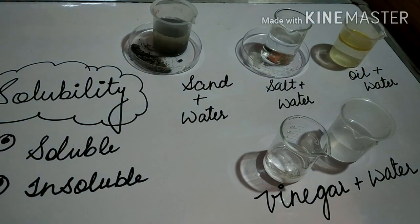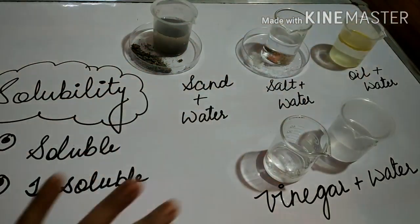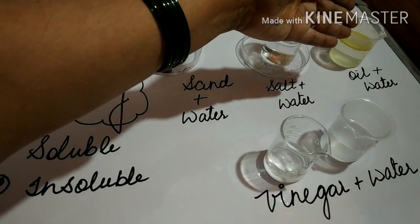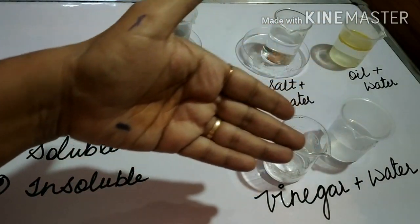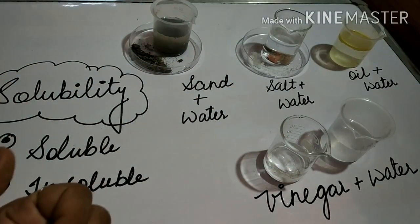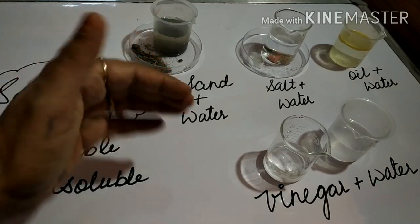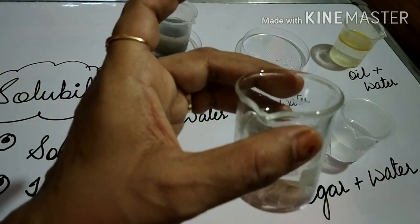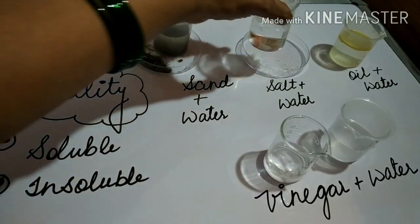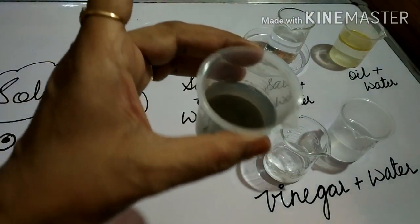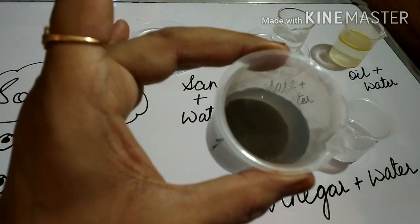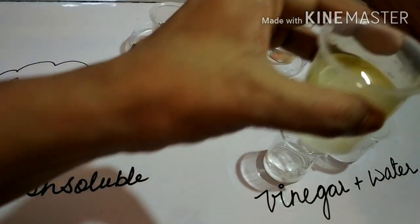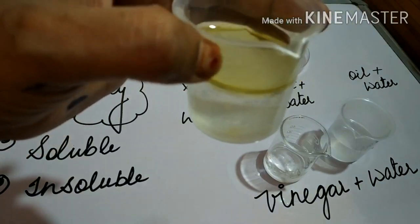Now children, you can see there are four solutions: one is a soil solution, another is a salt solution, third is an oil and water solution, and fourth is a vinegar and water solution. The conclusion is that there are few materials which are soluble. If you see the salt, it is fully disappeared in water. Whereas if you see the sand or soil, it remains settled down at the bottom — it is not disappeared. If you see the oil, it remains on the top of the water.